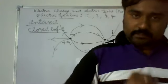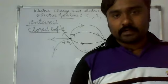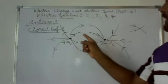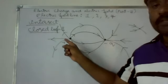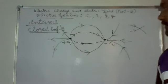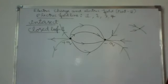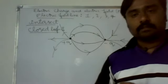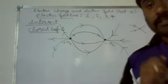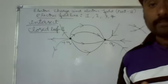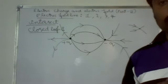So the properties so far: number one, electric field lines are directed away from positive point charge; number two, electric field lines are directed towards negative point charge; number three, electric field lines start from positive point charge and terminate on negative point charge; number four, electric field lines never intersect with each other and electric field lines can never be closed loops.